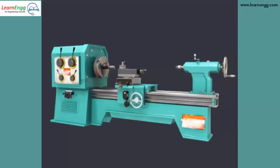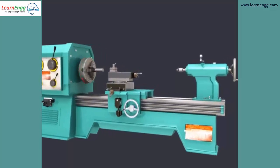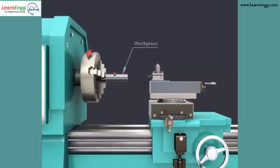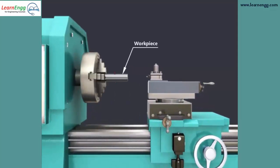Now, we see a 3D model of lathe. Let us see the principal components of the lathe: work piece, chuck, tool post, and cutting tool.